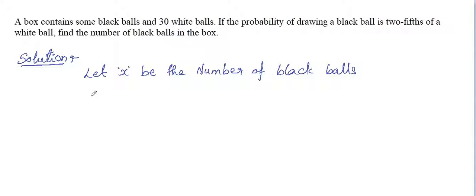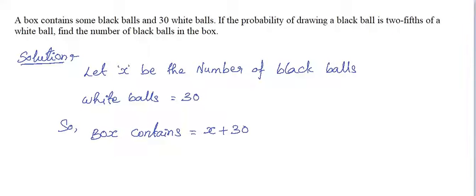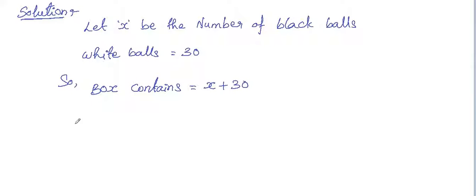So let x be the number of black balls and the number of white balls are 30. So the total balls contains in that box, the box contains both black and white balls, which is x plus 30.